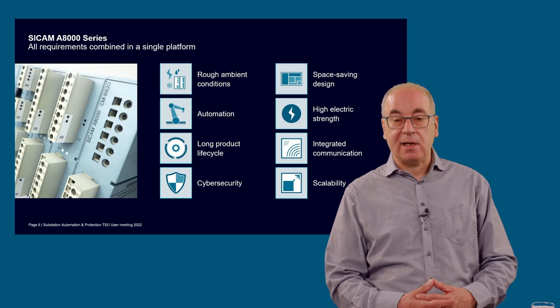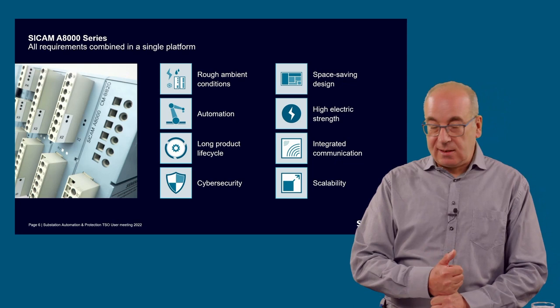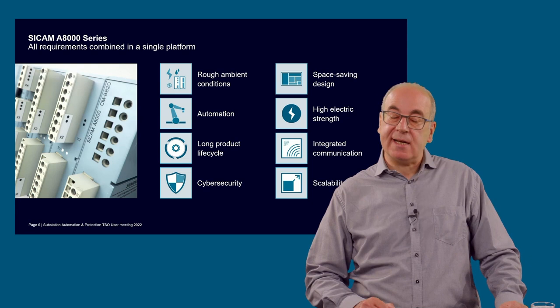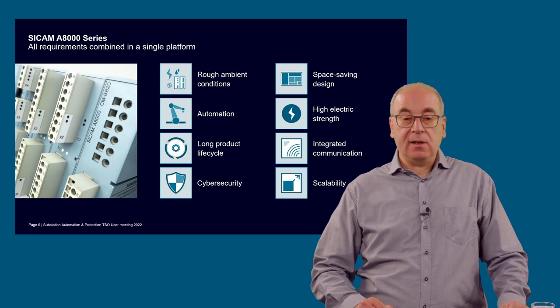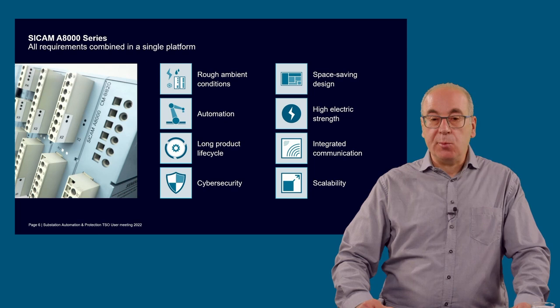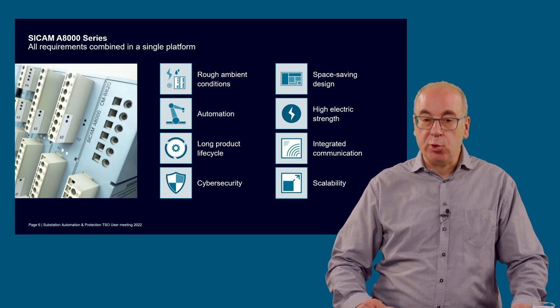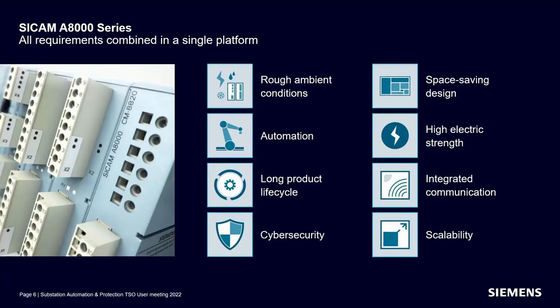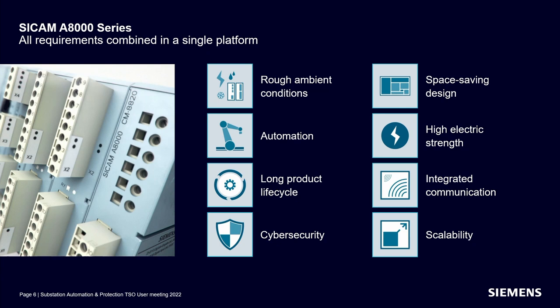This morning we heard about role-based access control. Our CCM8000 provides cybersecurity for role-based access control in combination with LDAP or a RADIUS server. We also heard about IEC 62351-5 secure communication — secure MMS using transport layer security with certificates. That is of course also available in the CCM8000 for communication from the substation to a high-level control center, but also from the substation down to protection devices and bay controllers — not only for IEC 61850, but also for IEC 104 and other Ethernet-based protocols.